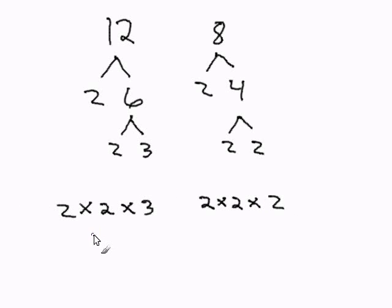Next, I'm going to cross out any duplicates. 2 and 2 can be crossed out. 2 and 2 can be crossed out again.